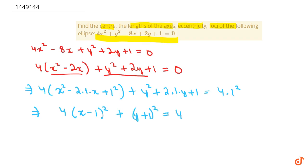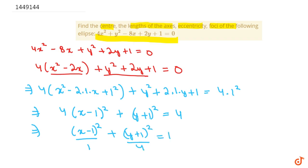Dividing both sides by 4, we get (x - 1)²/1 + (y + 1)²/4 = 1. This is our equation of the given ellipse in standard form.